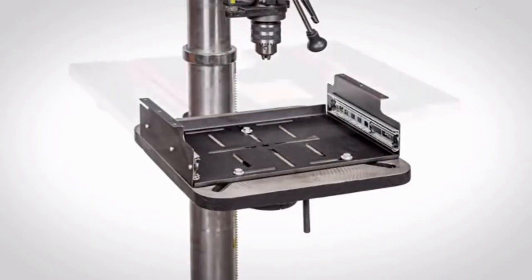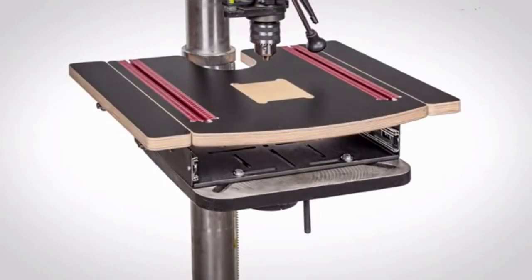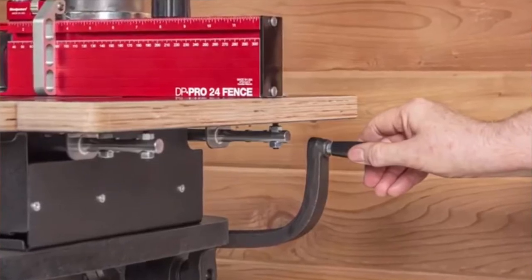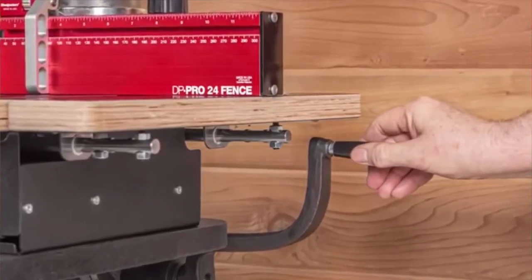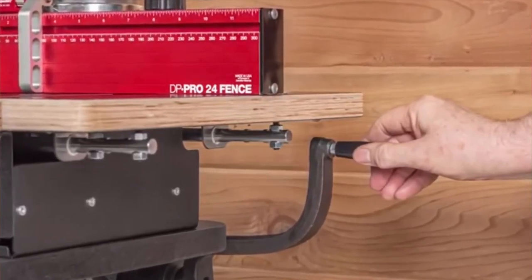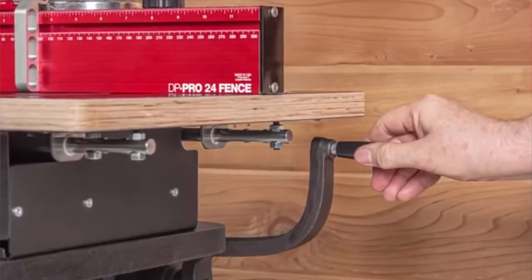Once you have the base bolted on, it's simple to attach the table to the base. Not only does the base make it simple to install, it creates clearance for the crank that raises and lowers the table.